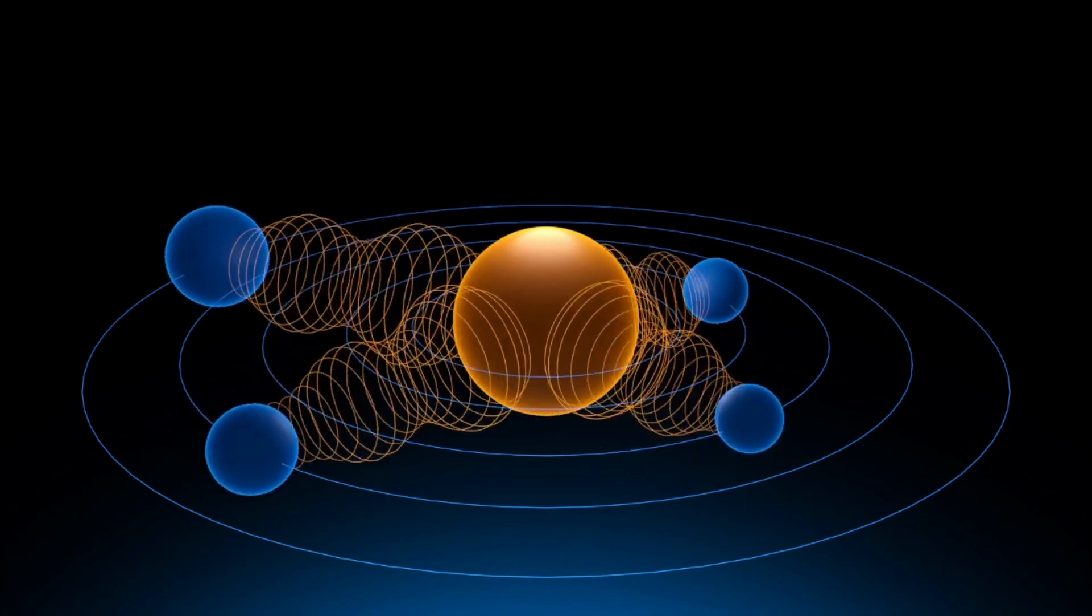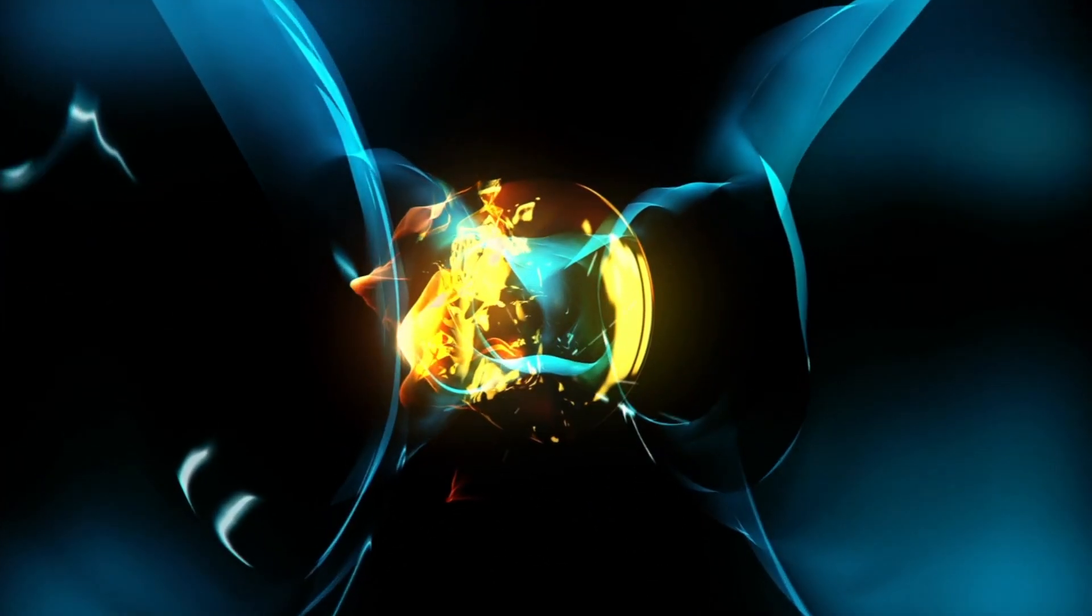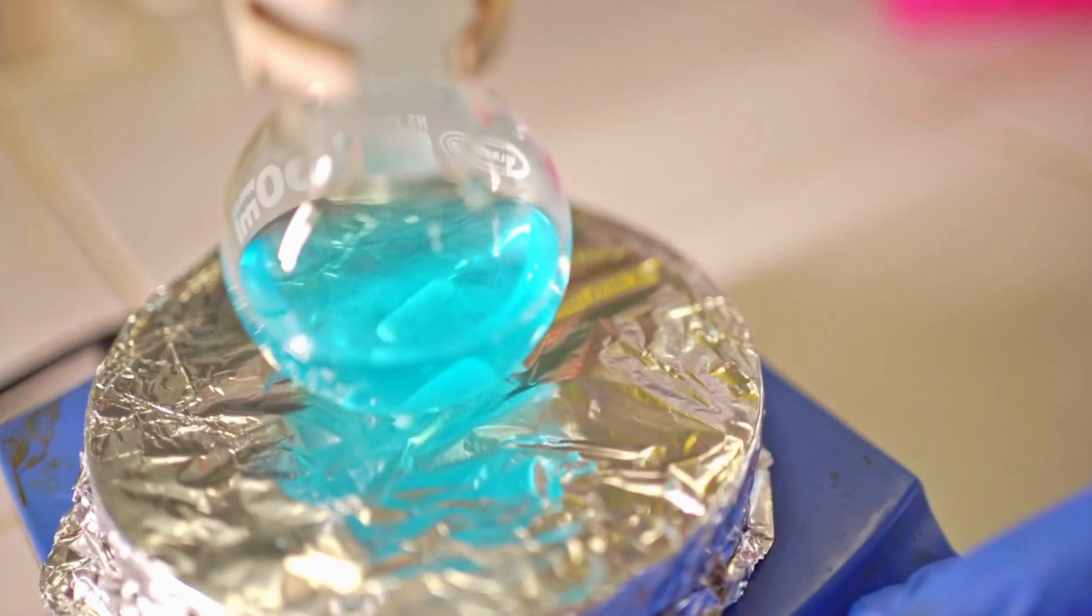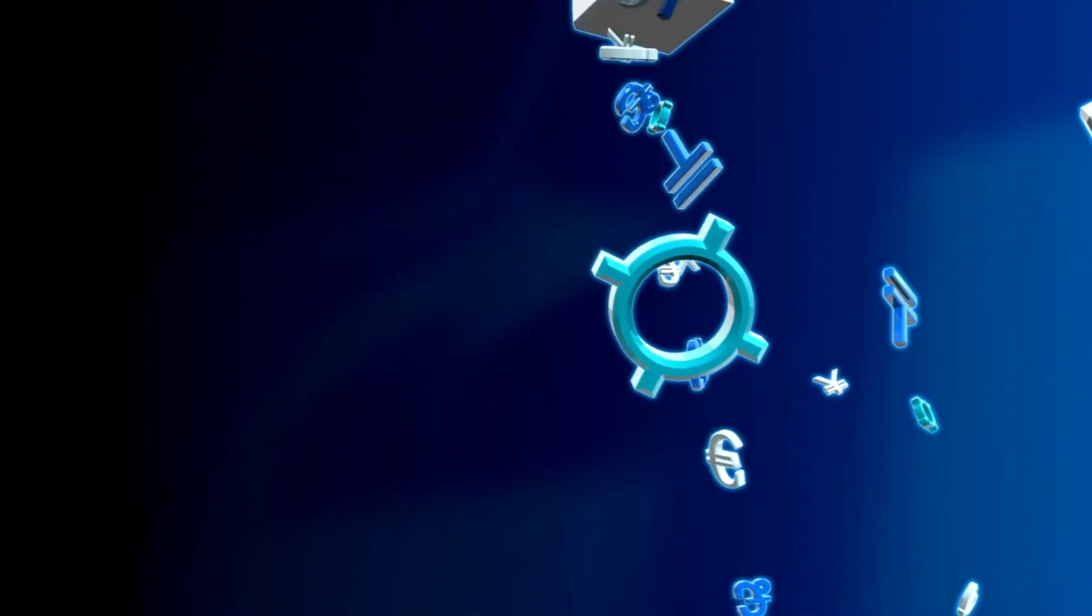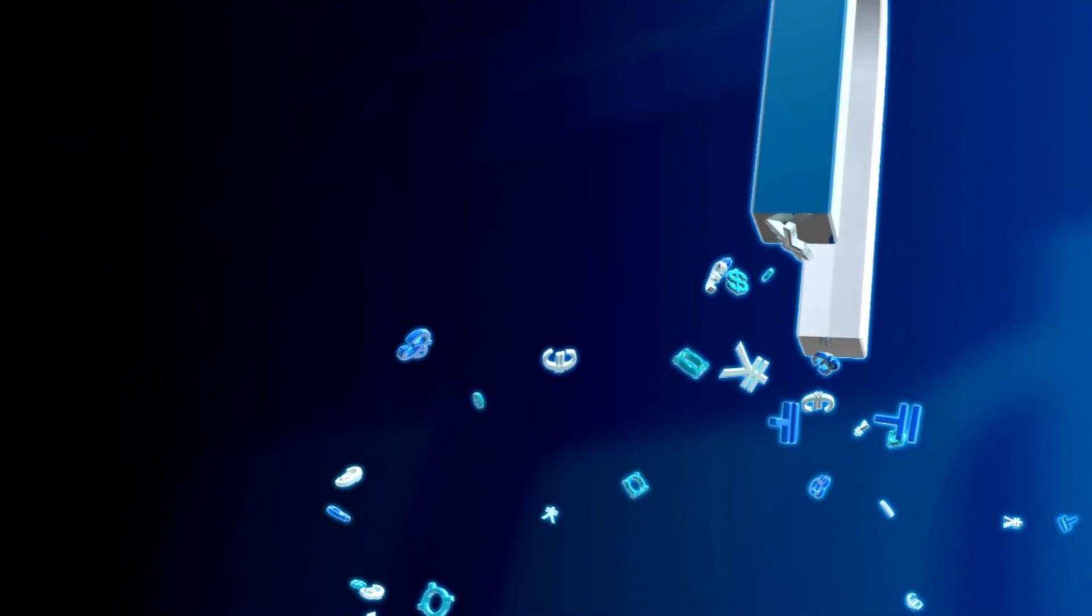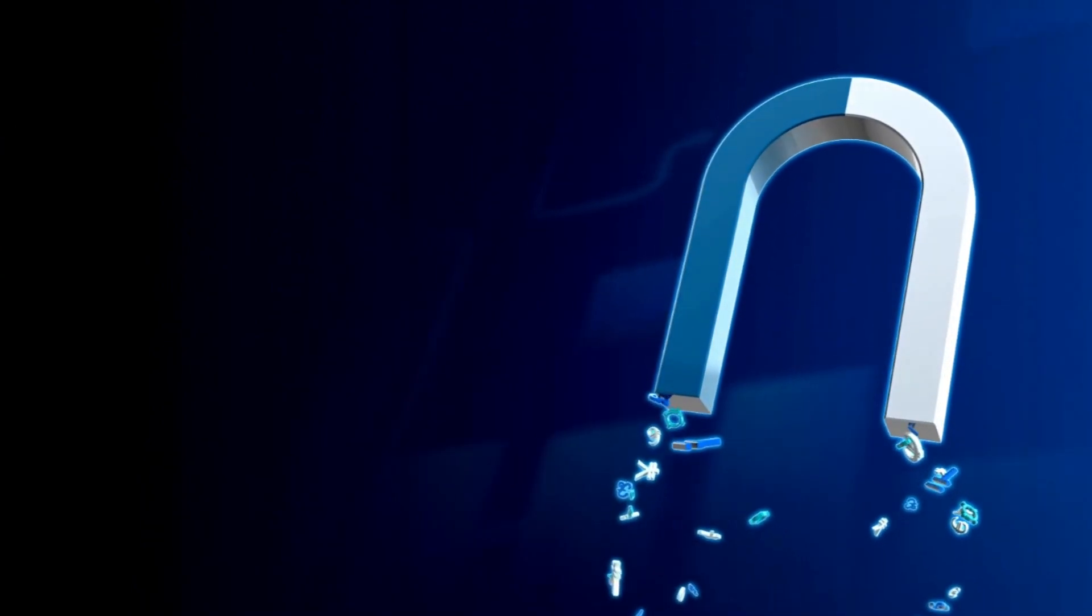Magnets are like a big invisible force that we can't see, just like the wind. But even though we can't actually see the force, we can see what the force does to things around it. In the olden days people thought magnets were magic because they would see things move without being touched.